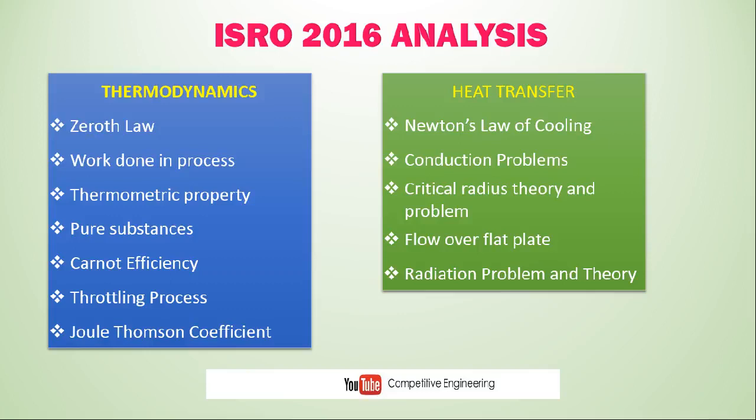From Heat Transfer, Newton's Law of Cooling — which falls under convection heat transfer — had one question about comparing the time required to cool a body. Conduction problems involving resistance concepts were asked. Critical radius of insulation had one theory question and one numerical problem. Flow over a flat plate had a simple problem. Radiation questions included theory on gray bodies and a problem on emissive power of a black body — for example, what happens to emissive power when the temperature increases, which involves Stefan-Boltzmann law.